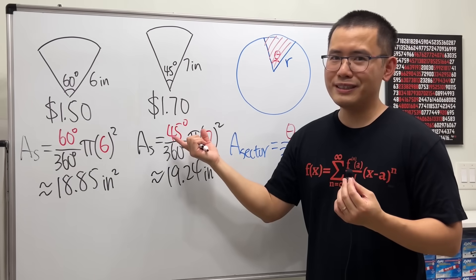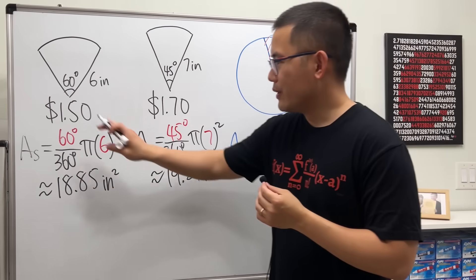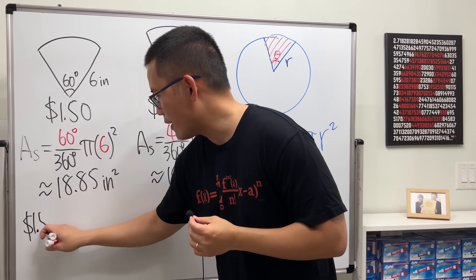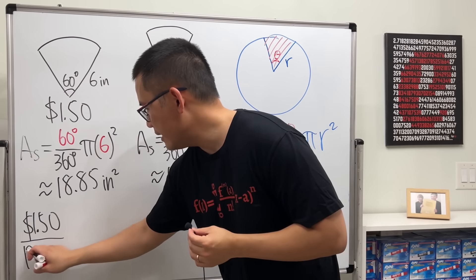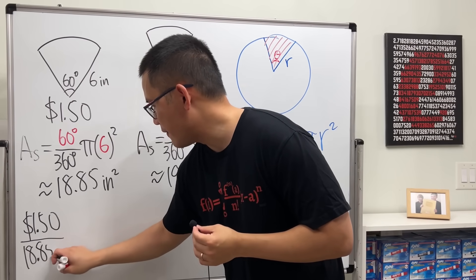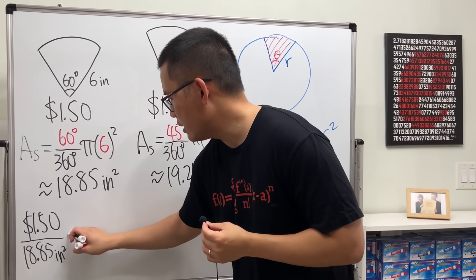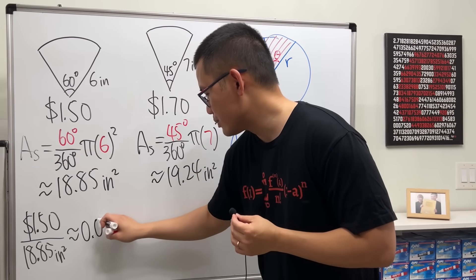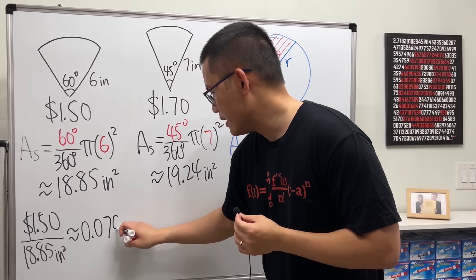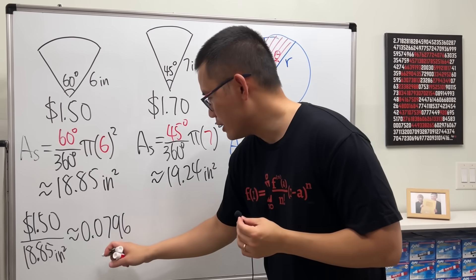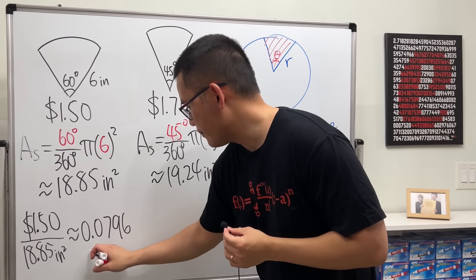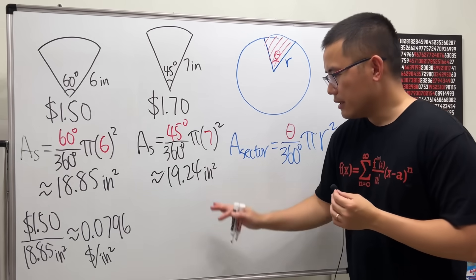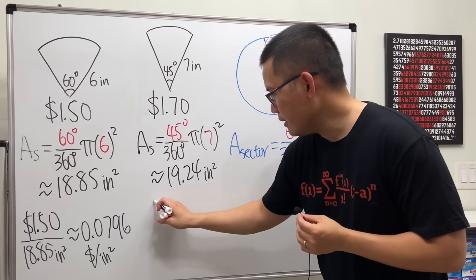So now this right here, we will have to look at the price which is $1.50. Go ahead and divide that by 18.85 inches squared, and this right here will give us approximately 0.0796, and the unit for this is dollars per inches squared.